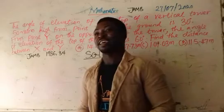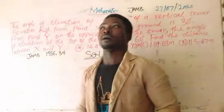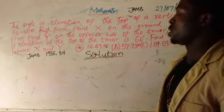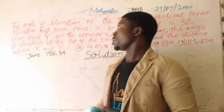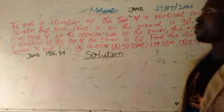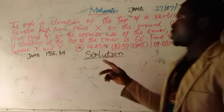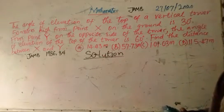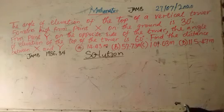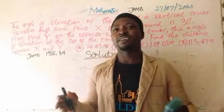Welcome everyone to a JAM class on Mass Girls channel. Today we are going to treat question number 34, JAM 1986. The question is: the angle of elevation of the top of a vertical tower 50 meters high from point X on the ground is 30 degrees. From point Y on the opposite side of the tower, the angle of elevation of the top of the tower is 60 degrees. Find the distance between X and Y. This is quite simple.